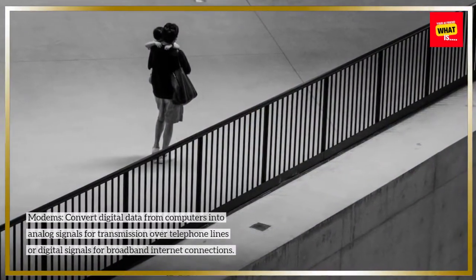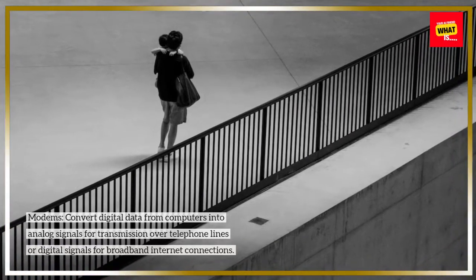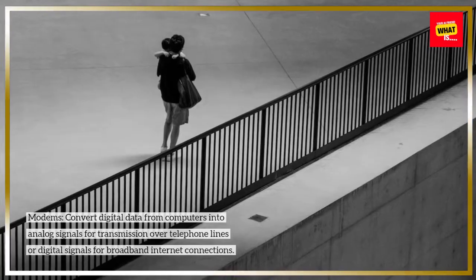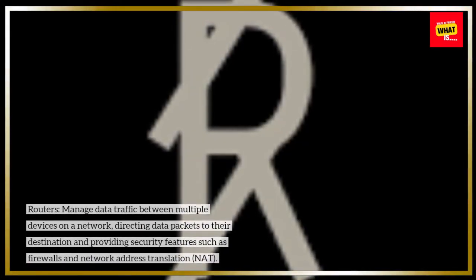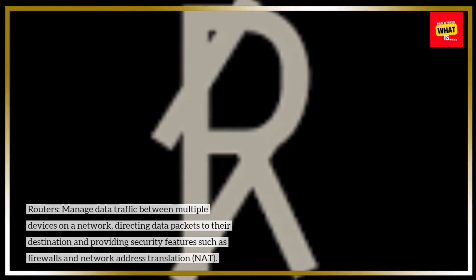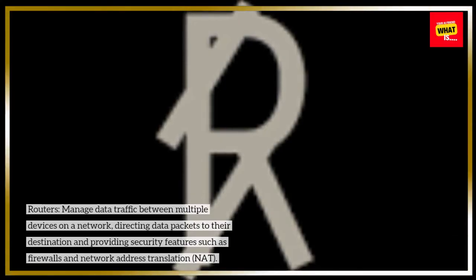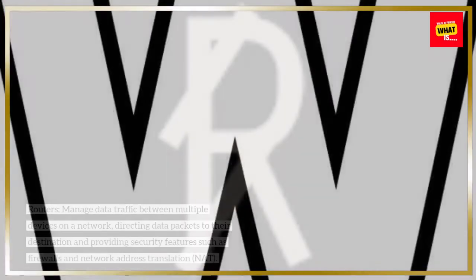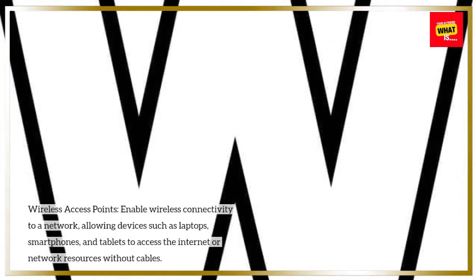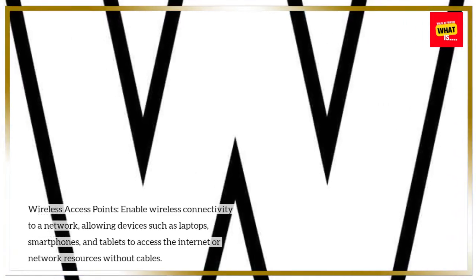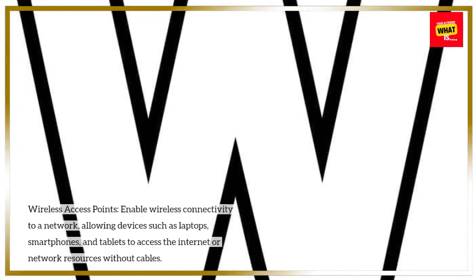Modems convert digital data from computers into analog signals for transmission over telephone lines, or digital signals for broadband internet connections. Routers manage data traffic between multiple devices on a network, directing data packets to their destination and providing security features such as firewalls and network address translation. Wireless access points enable wireless connectivity to a network, allowing devices such as laptops, smartphones, and tablets to access the internet or network resources without cables.